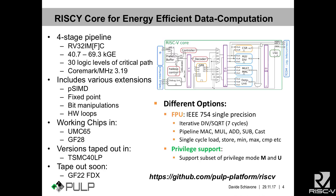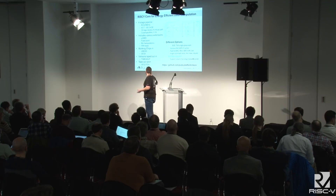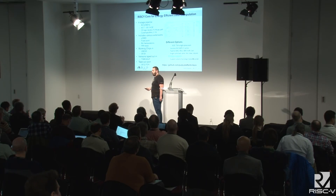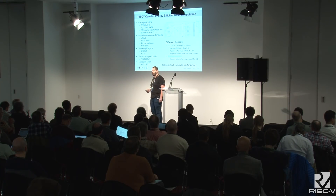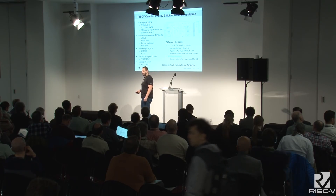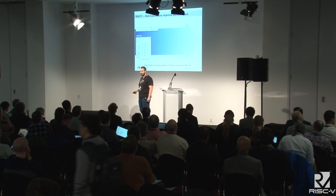RI5CY is extensible with floating-point and has been extended with privileged machine and user modes to provide a little bit of security. It is completely available on GitHub — you can go there, pull it, and use it.